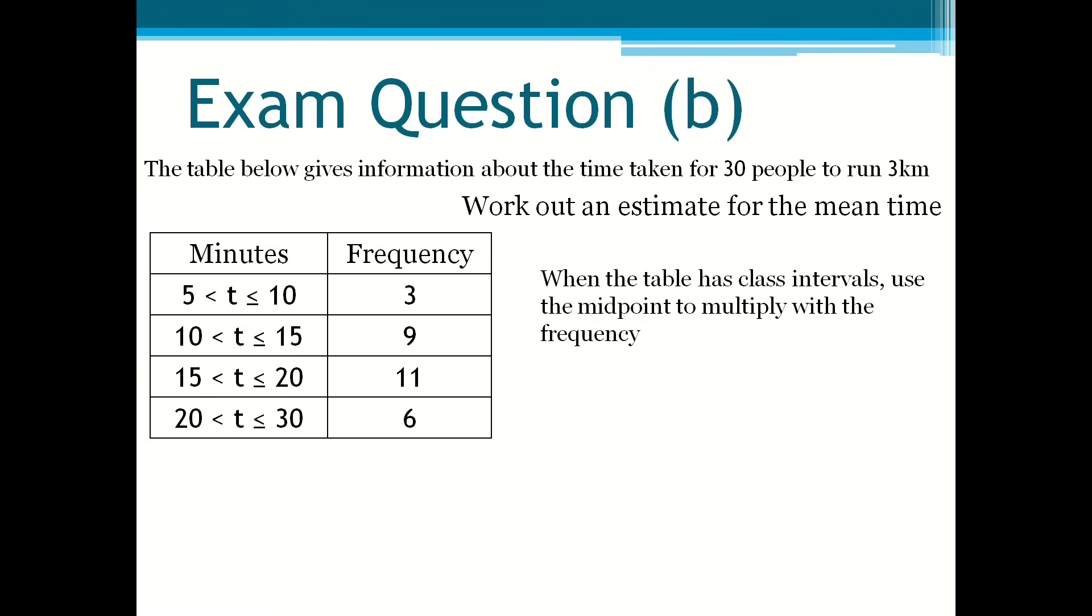So let's say that the class interval for the first 3, when you have a class interval that has a difference of 5, you have to divide it by 2 to get 2.5. And then for the last row where the class interval has a range of 10, you divide it by 2 to get 5. Those numbers are what you will use to multiply with the frequency.